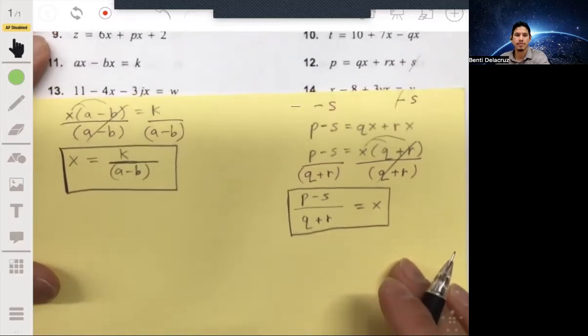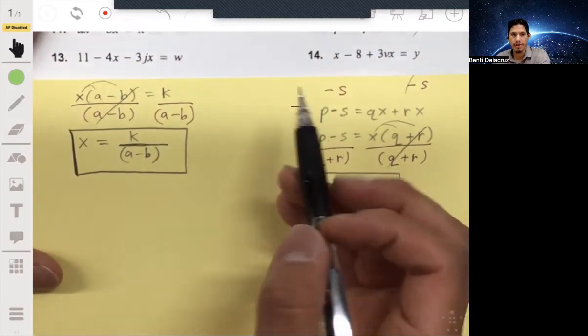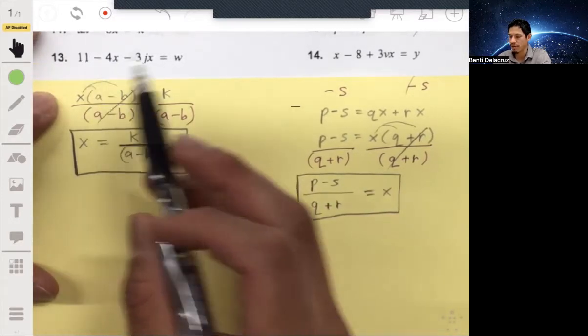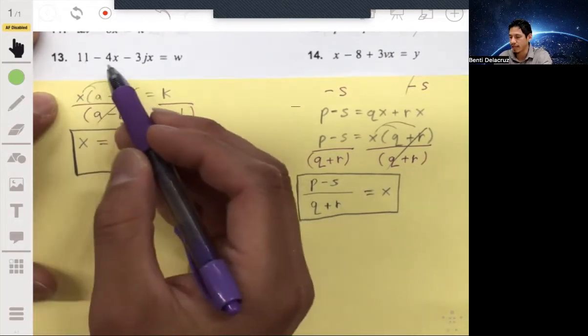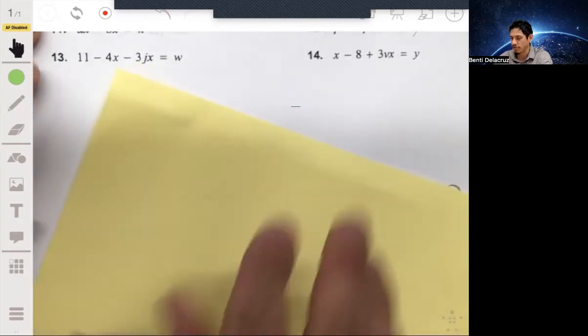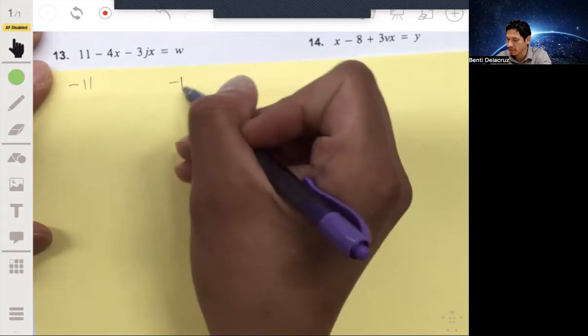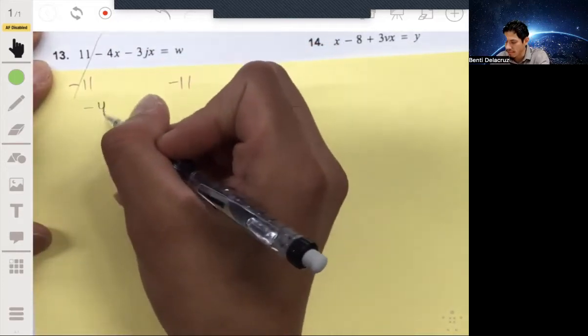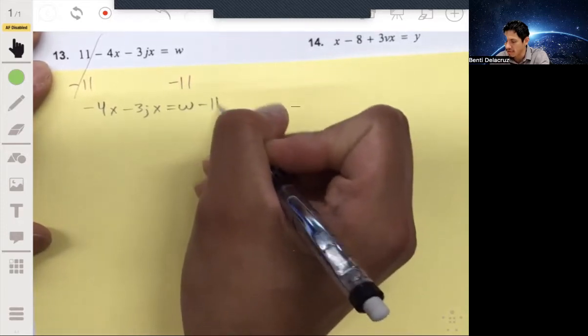Alright, let's look at two more. Let's look at 13. Alright, so here we have the 11 that we need to get rid of. So what we're going to do is we're going to subtract that 11 from both sides. Let me actually flip this over. Let me subtract 11 from both sides. Before we do anything, so that goes away. And then you'll have negative 4X minus 3JX equals W minus 11.